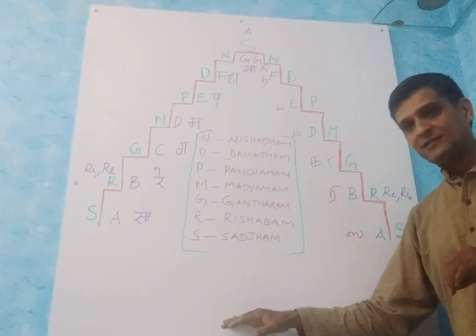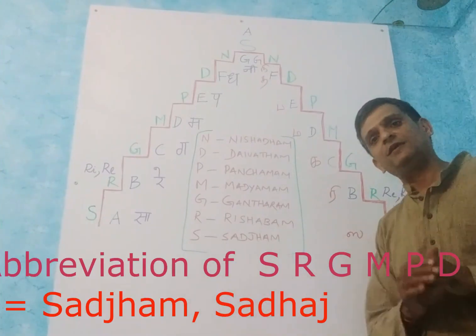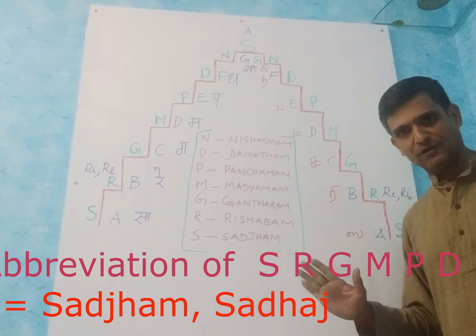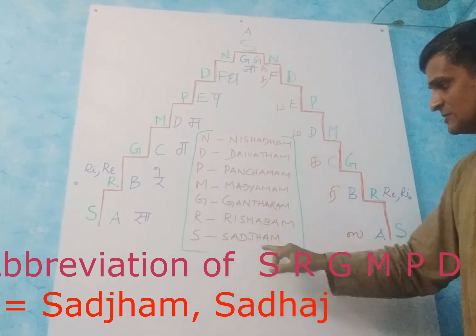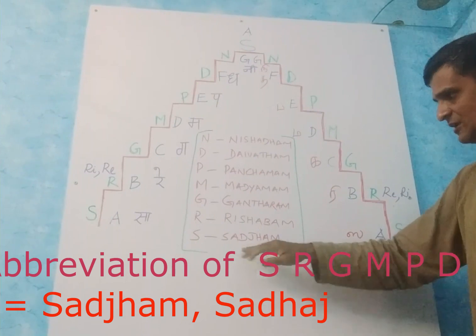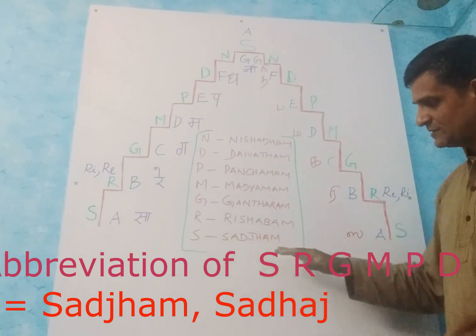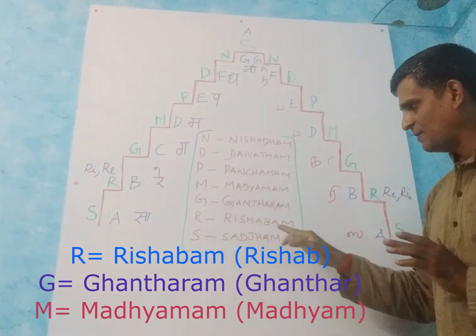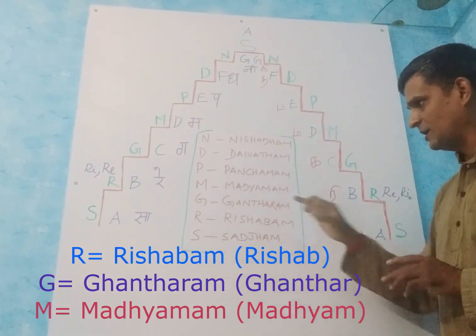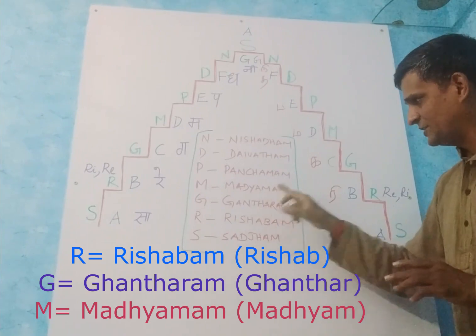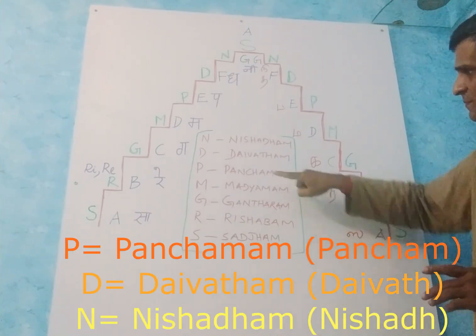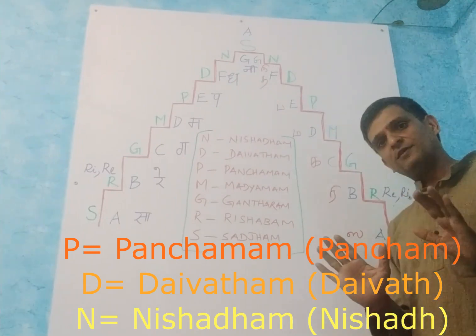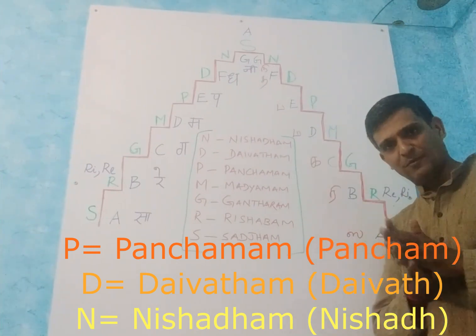In Indian classical, Sa Re Ga Ma Pa Da Ni has full names. In Carnatic: Sa is Shadjam, Ri is Rishabam, Ga is Gandharam, Ma is Madhyamam, Pa is Panchamam, Da is Daivatham, Ni is Nishadam. In Hindustani, the same: Sa is Shadj, Ri is Rishabh, Ga is Gandhar, Ma is Madhyam, Pa is Pancham, Da is Dhaivat, Ni is Nishad. These are the full names of the seven svaras.